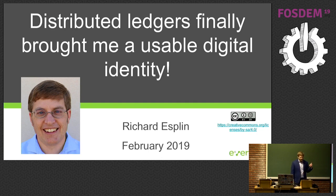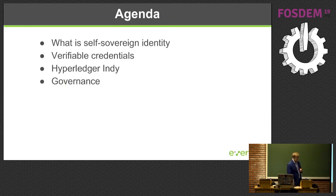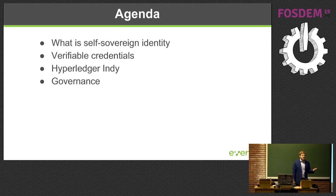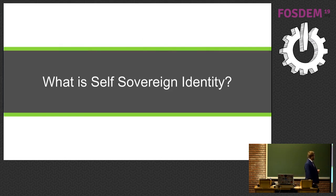The goal today is to explain how blockchain — how distributed ledgers — finally brings about usable digital identities. It's more about distributed ledgers than blockchain, but a usable digital identity we call self-sovereign. We're going to talk about that term. It depends on verifiable credentials. Indy is the project that makes this happen, and we're going to talk about the governance that's necessary for a self-sovereign identity to be useful.